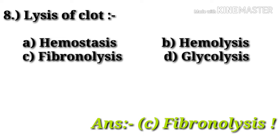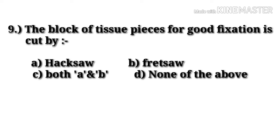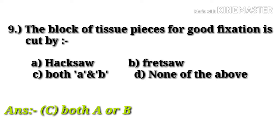Question number 9: the block of tissue pieces for good fixation is cut while — option A: Hexa, option B: Fresco, option C: both, option D: none of the above. Option C, both Hexa and Fresco, are correct for cutting tissue pieces for good fixation.